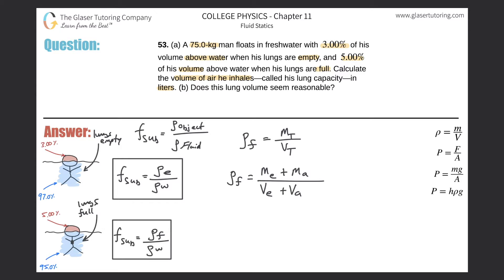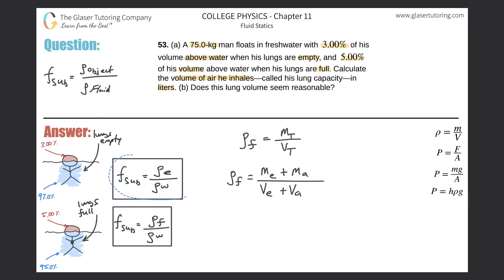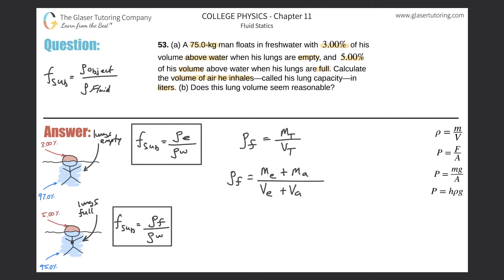What we're after is the volume of air he took in. We need to know every other variable. We can solve for the density of the man's body when his lungs are full by cross-multiplying the earlier equation: density of man (full) equals the fraction submerged when full — subscript f — multiplied by the density of the water. Similarly, density of man (empty) equals fraction submerged (empty) multiplied by density of water.